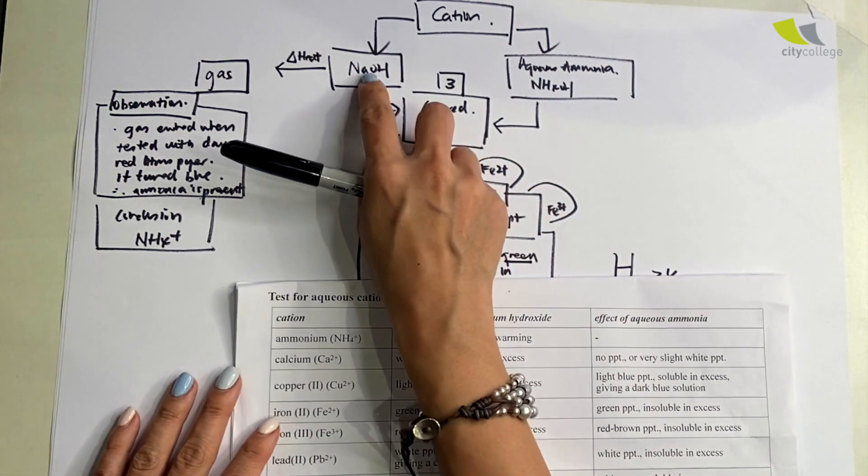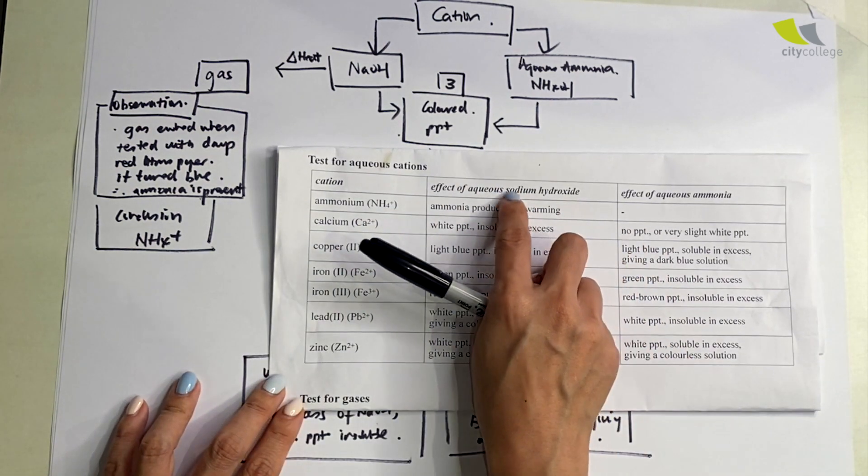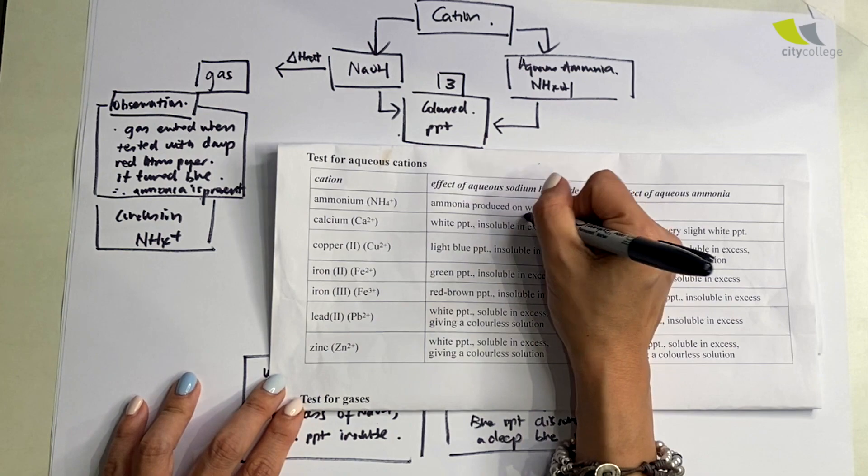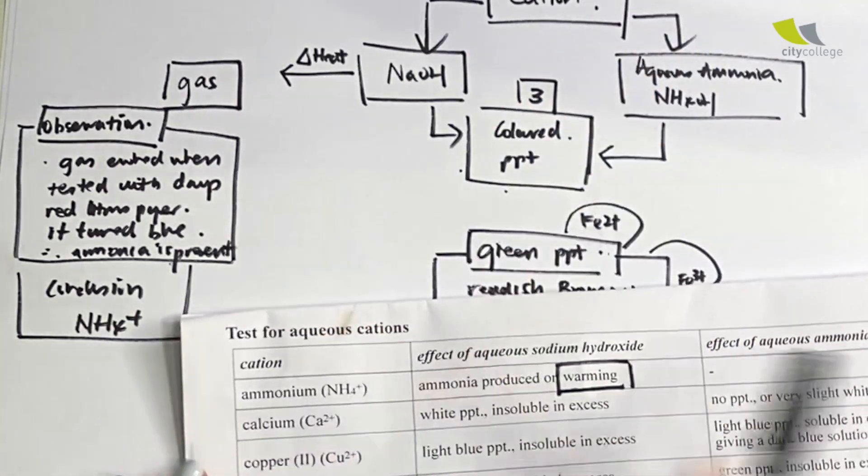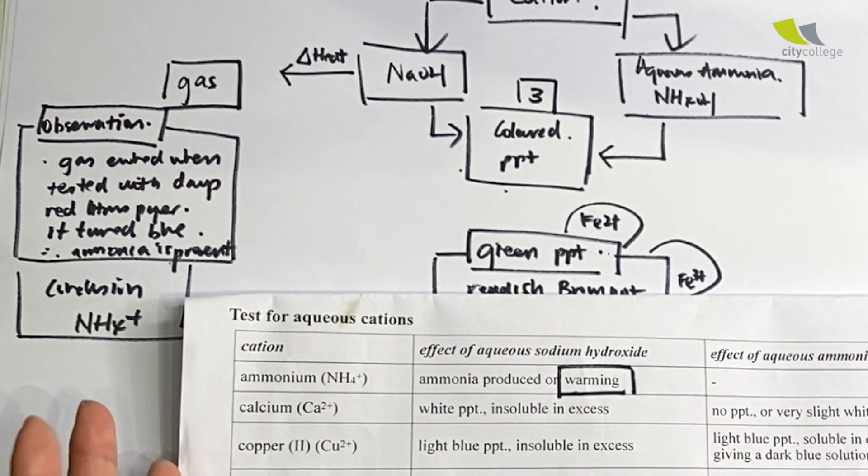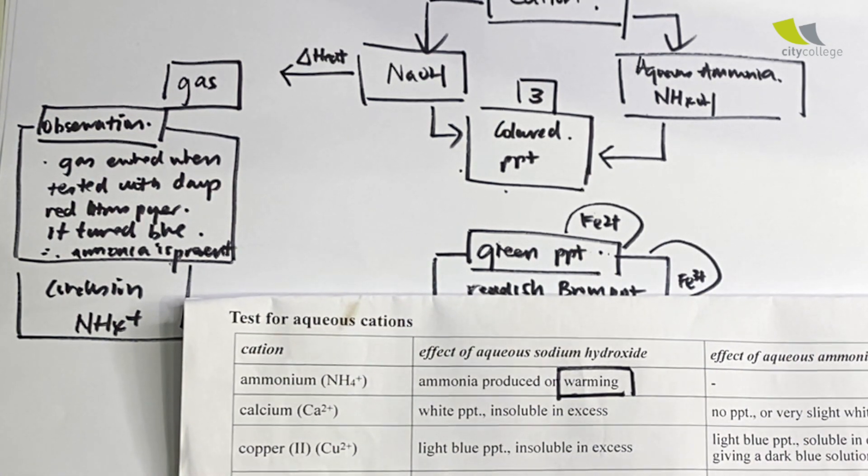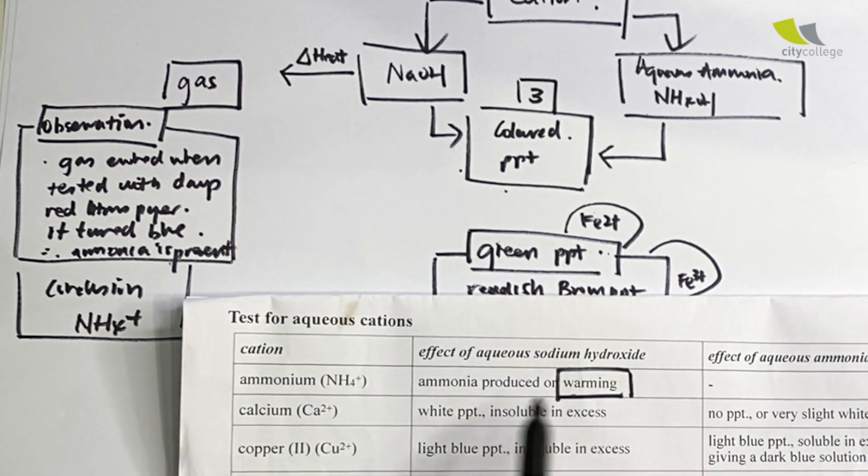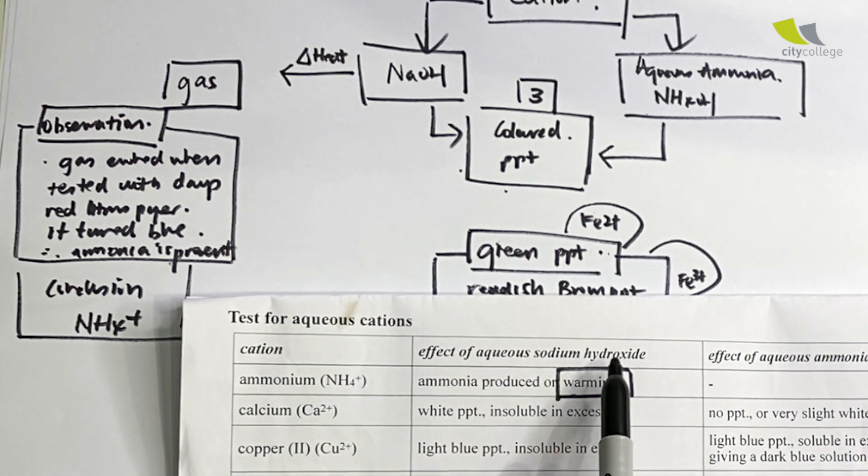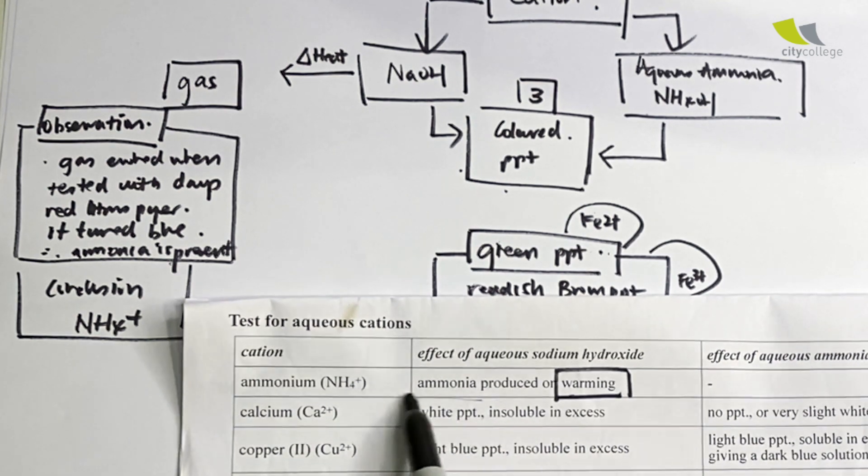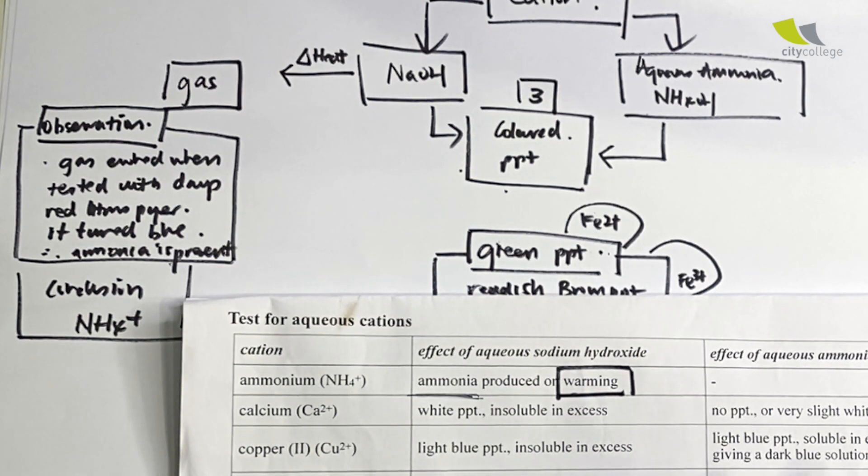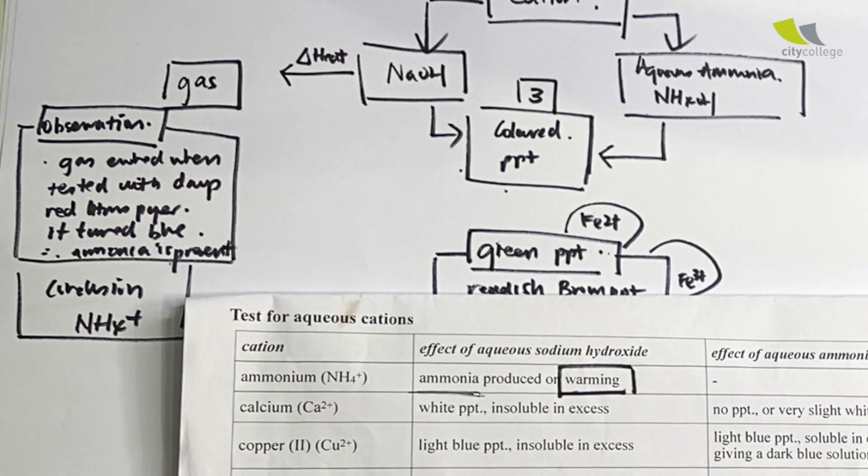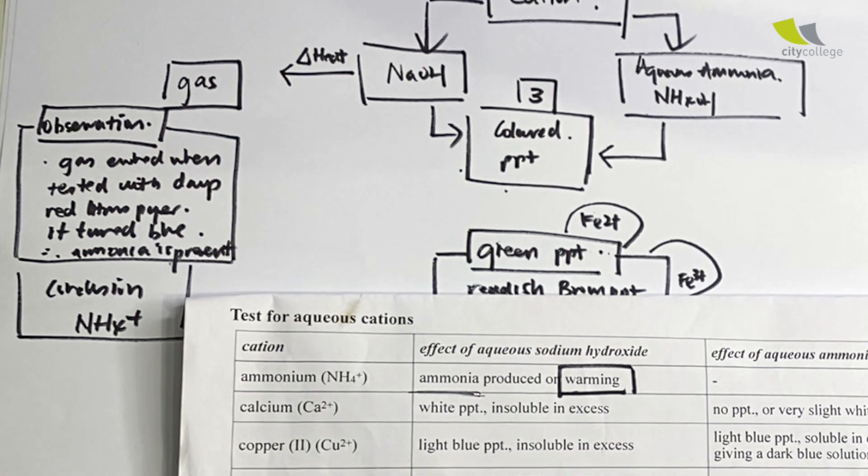An interesting fact is this one here. Sodium hydroxide, ammonia produced upon warming. As you can see in this entire QA notes, they are very specific. They say that there's only one that requires heating, which is ammonium. The purpose of adding sodium hydroxide upon heating is to release ammonia gas.